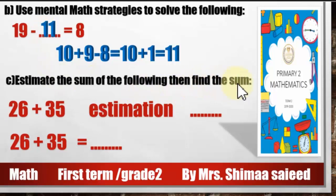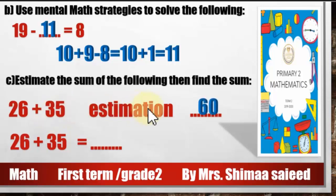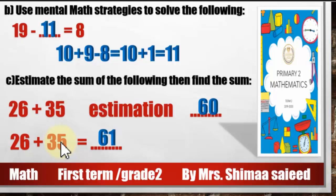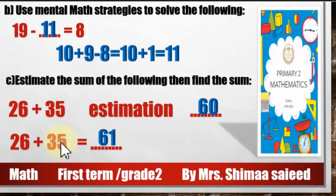Estimate the sum, then find the sum: 26 plus 35. For estimation, look at the tens: we have 2 tens and 3 tens — that's 5 tens. The ones sum to more than 10, so add 1 ten. My estimation is 60. Now find the sum: 6 plus 5 equals 11, write 1 carry 1; 1 plus 2 plus 3 equals 6. The sum is 61 — our estimate of 60 is very close.